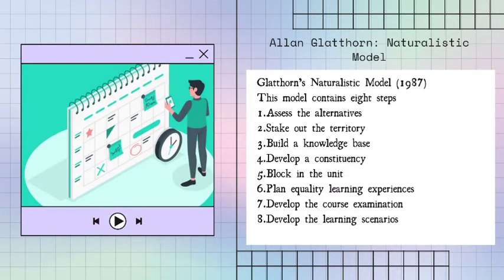Next, we have Alan Glatthorn's naturalistic model. The naturalistic model results in curriculum that is easier to implement and works well with teachers' planning styles because it is more responsive to political realities and can move from the larger to the smaller, being more flexible and less rigid. It has eight steps: assess the alternatives, stake out the territory, build a knowledge base, develop a consensus, block in the units, establish quality learning experiences, develop the course examination, and develop the learning scenarios.